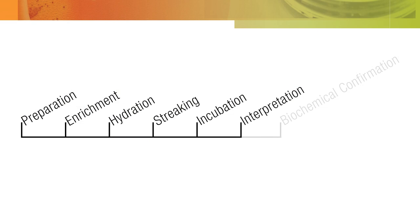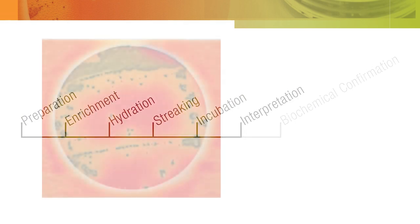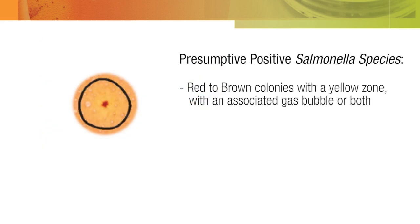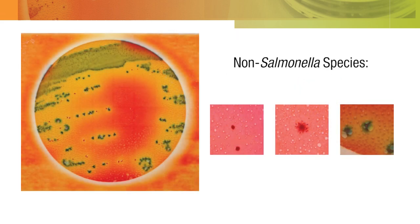The next step in testing is interpretation for presumptive positive salmonella colonies. Now look at the isolated colonies for salmonella species. Presumptive positive salmonella species are red to brown colonies with a yellow zone with an associated gas bubble or both. An associated gas bubble is defined as being located within one colony diameter distance from the colony. All other colony colors and types are non-salmonella species.